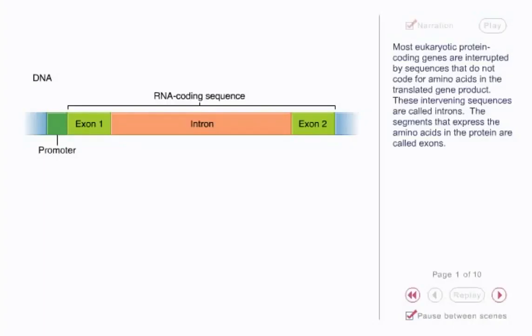Most eukaryotic protein-coding genes are interrupted by sequences that do not code for amino acids in the translated gene product. These intervening sequences are called introns. The segments that express the amino acids in the protein are called exons.